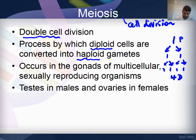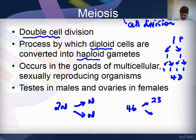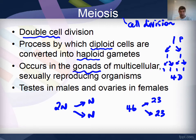Diploid cells become haploid cells — 2n becomes n. In humans this is equivalent to 46 chromosomes in each of our cells splitting into the 23 chromosomes that we have in each of our sperm or eggs. The process of meiosis occurs in the gonads — the testes and ovaries — within humans.